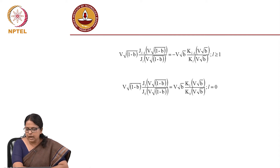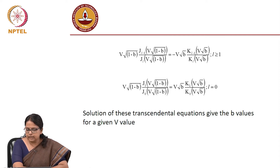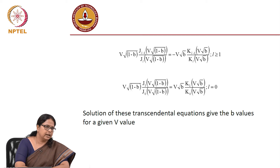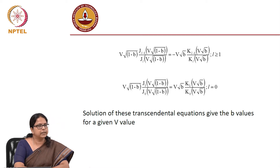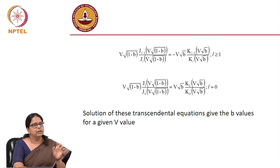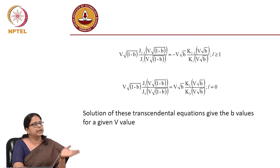So the only unknown is b. A solution will give the b for a given v, and once I know b — which is a normalized propagation constant — I know the betas. And once I know beta I can work out my complete solution because I know my u and w, and once I know u and w I know the arguments of the Bessel functions and I can plot these Bessel functions.